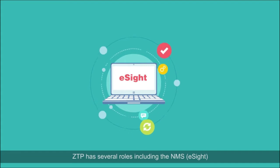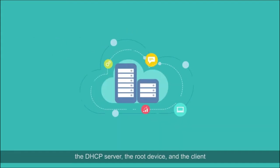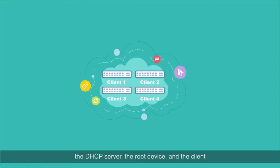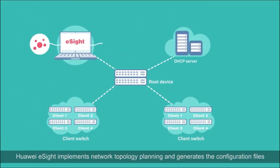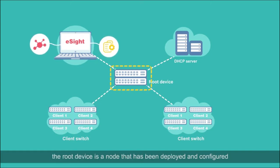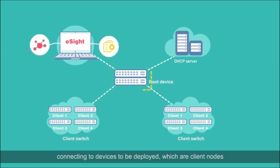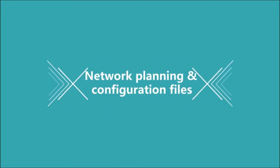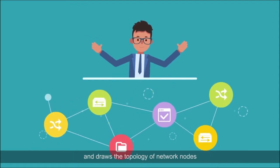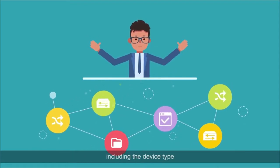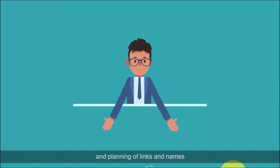ZTP has several roles including the NMS, eSight, the DHCP server, the root device, and the client. Huawei eSight implements network topology planning and generates the configuration files. The root device is a node that has been deployed and configured, connecting two devices to be deployed, which are client nodes. Network engineers can carry out network planning on eSight and draw the topology of network nodes, including the device type and planning of links and names.